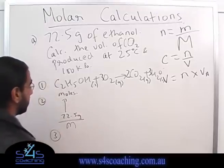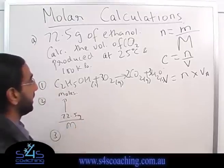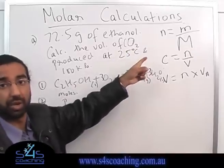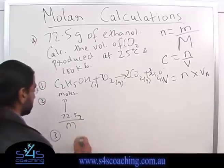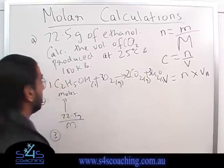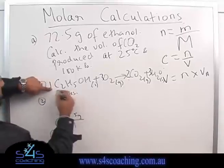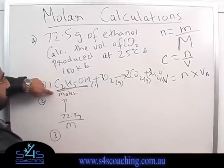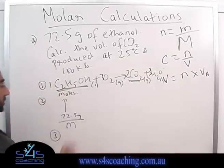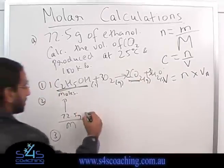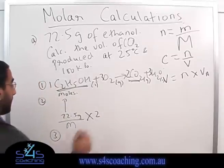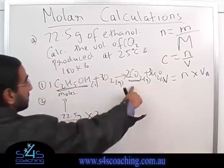My step three would be to use the mole ratio. Now, what do I want? I want carbon dioxide. Correct? So to calculate the amount of carbon dioxide, what I need to do is because the mole ratio is one to two, for every mole of ethanol over here, I have two moles of carbon dioxide. So what I need to do is I need to take this number and I have to multiply it by two. Okay? And that will give me the moles of carbon dioxide.